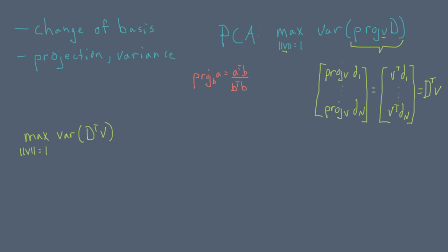Now in the second video we saw that the variance of a vector in mean deviation form is equivalent to the inner product of the vector with itself.